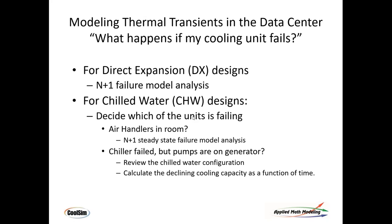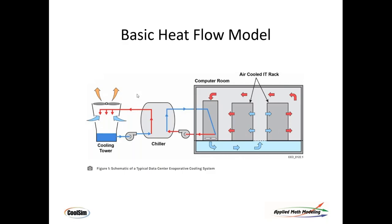The other case is the chiller has failed but the pumps are on the generator. The pumps are typically redundant and on generator backup. Sometimes people want to understand what happens if the chiller goes out but pumps are still running. If pumps aren't on, it's not really worth considering. But with the chiller failed and pumps running, there's a chilled water loop that will keep the data center cool for a period of time — and people often want to know how long.